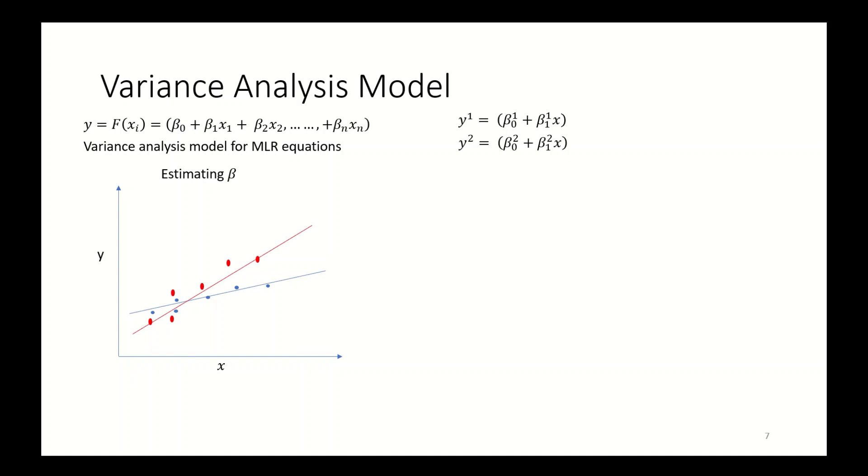Now, if we take another subset of data and get the linear equation, we will find a different set of slope and intercept values. Running the same process n times will help to generate n slope and intercept values. n sets of beta 1 and intercept beta naught can generate mean and standard deviation of beta 1 and beta naught.